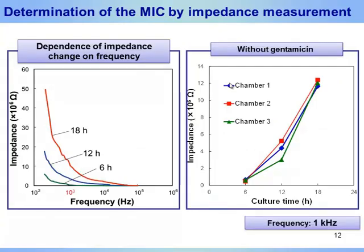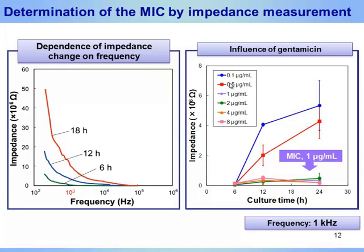This figure shows the dependence of measured impedance on frequency. A more distinct difference was observed at low frequency, so the measurement was carried out at 1,000 Hz. This graph showed the change of impedance at 1,000 Hz when E. coli cells were cultured in the device without gentamicin; a very similar change was observed in all three chambers. We then conducted the same measurement with different concentrations of gentamicin. The growth of bacteria was inhibited at concentrations higher than 1 microgram per milliliter. In other words, the minimum inhibitory concentration of gentamicin was determined to be 1 microgram per milliliter, and this result agrees with those obtained by the other two methods.